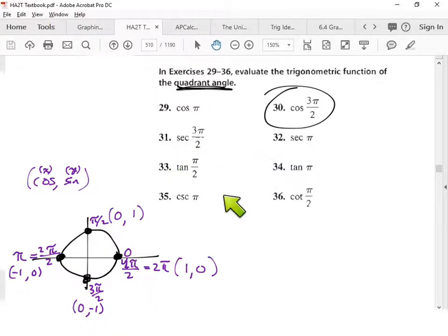What about secant? What is secant? Secant is the reciprocal of cosine. So it's one over cosine of π. And do you guys know what cosine of π is? Negative one. So one over negative one, which equals negative one.